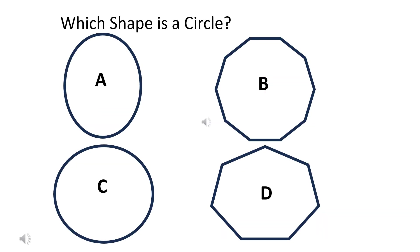Which shape is a circle? The right answer is C.